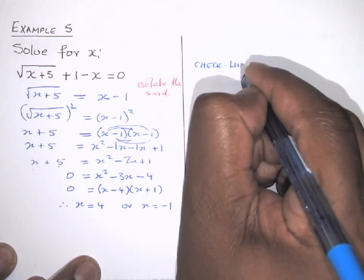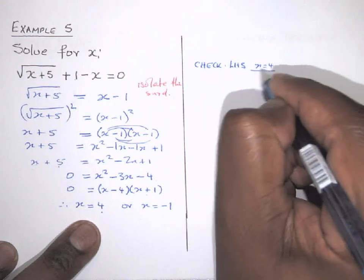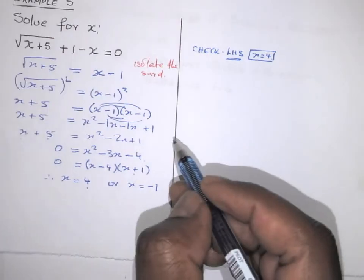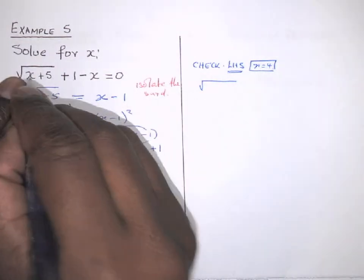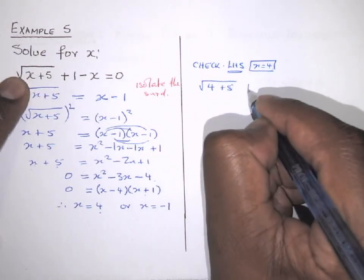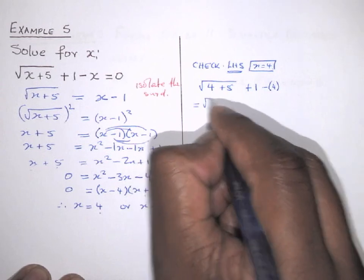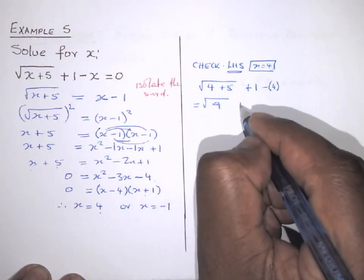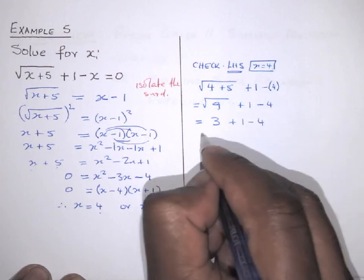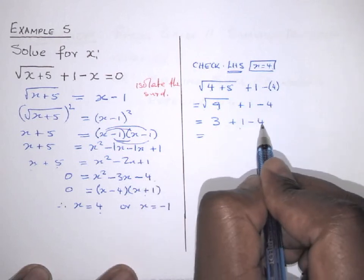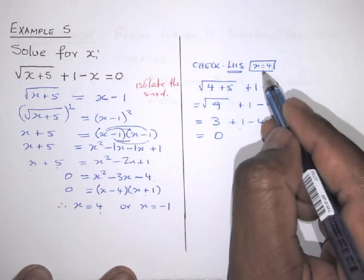Checking x = 4: left hand side is √(4 + 5) + 4 + 1 − 4 = √9 + 1 − 4 = 3 + 1 − 4 = 0, which equals the right hand side. So x = 4 is a valid answer.